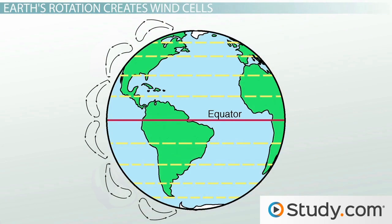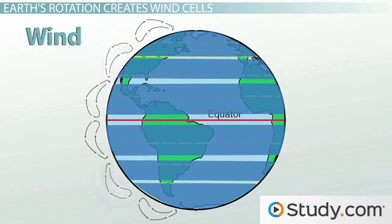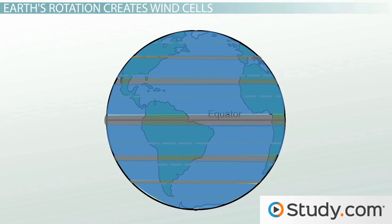The northern and southern hemispheres each have three air circulation cells. These cells help distribute heat and air across Earth. Each cell is like a wide belt around that part of Earth, and in these belts we get wind, which is horizontally moving air. Where each cell meets is also like a belt, but these are thin, windless strips that girdle Earth. You can remember which is which because the windy cells are wide, and both begin with W.